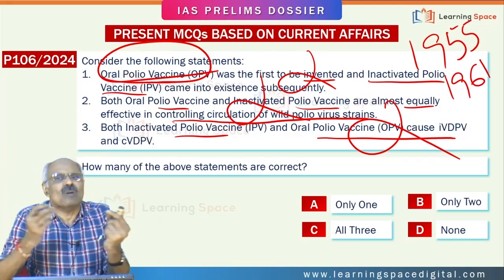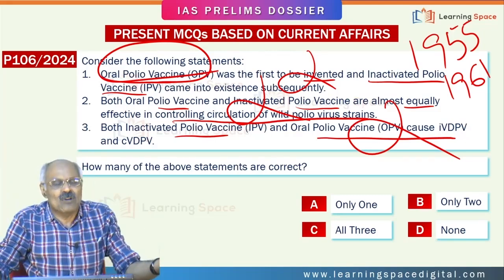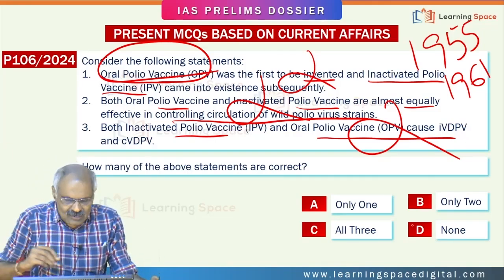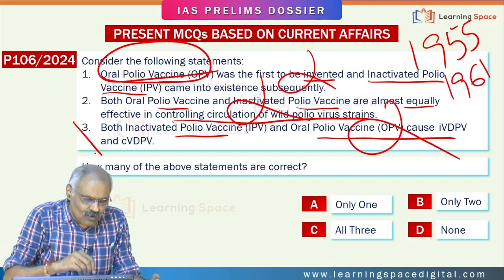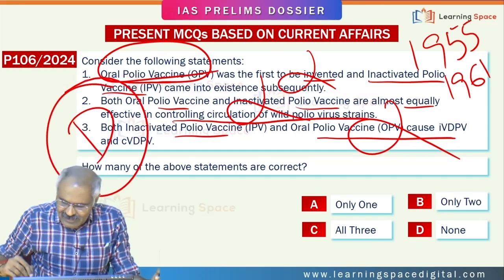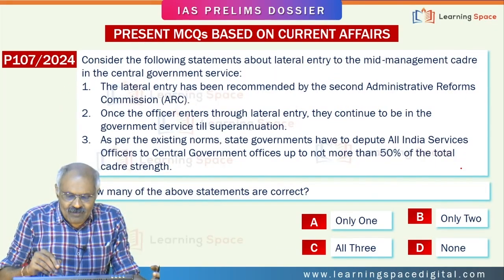There is no clarity on all statements — all the statements are wrong, so the right option is D.